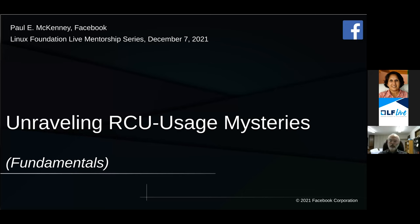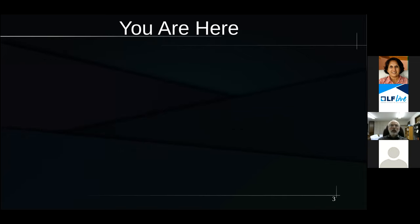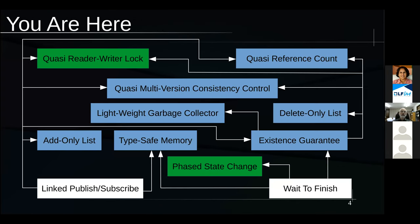Thank you, Marisa, and thank you, Oshoa. As we said, we're going to unravel some RCU usage miseries. This is a roadmap of what we're going to be going through. We're going to be talking about the green boxes and the white ones on this chart — a map of the use cases. We'll do a quasi-reader-write-lock first, and if we have time, we'll get to a phase state change. We expect to have the rest of these in a presentation in February.